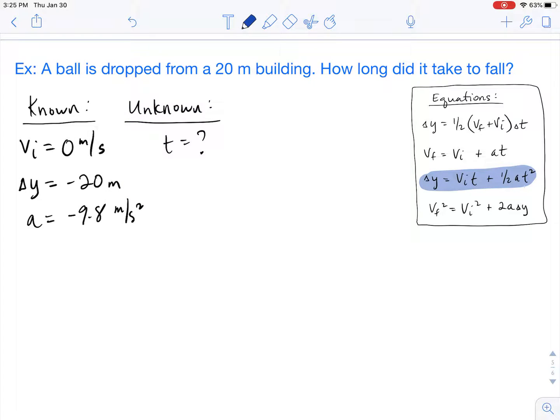At this point it's simply plugging in the values and solving. So our delta y is negative 20, vi was 0, a is negative 9.8.